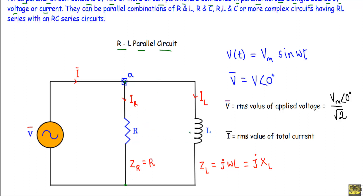This RL parallel circuit is connected across a sinusoidal voltage source or AC voltage source. We can replace this inductance with C — in that case it will be an RC parallel circuit — or we can add an additional capacitor in parallel, making it an RLC parallel circuit. In a more complex case, we can have a resistance R in series with an inductance L connected in parallel with a resistance R in series with a capacitance C.